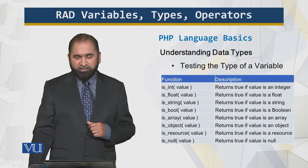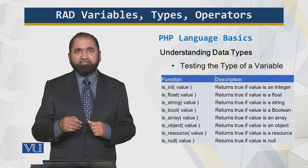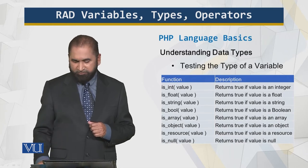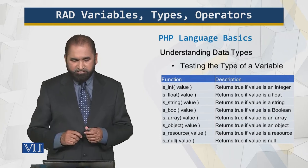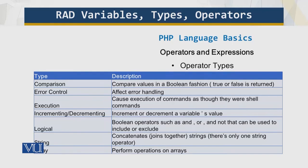Here are the commands for testing the type of a variable. As you can see, you can check if it's an integer type, check if it is a Boolean type, and also check what the type and application of that variable is.